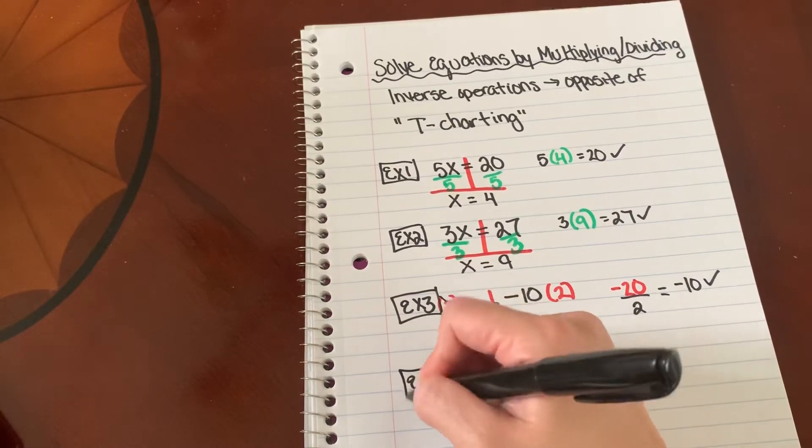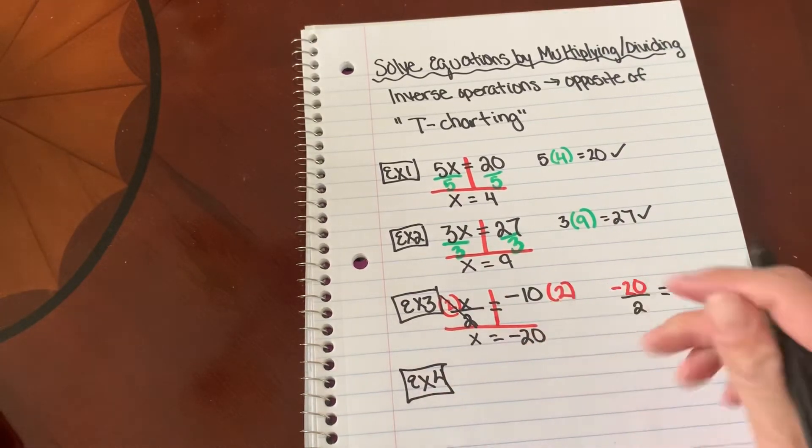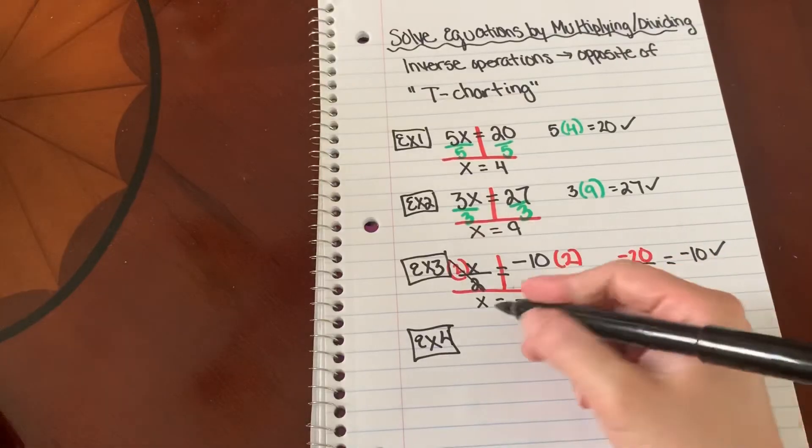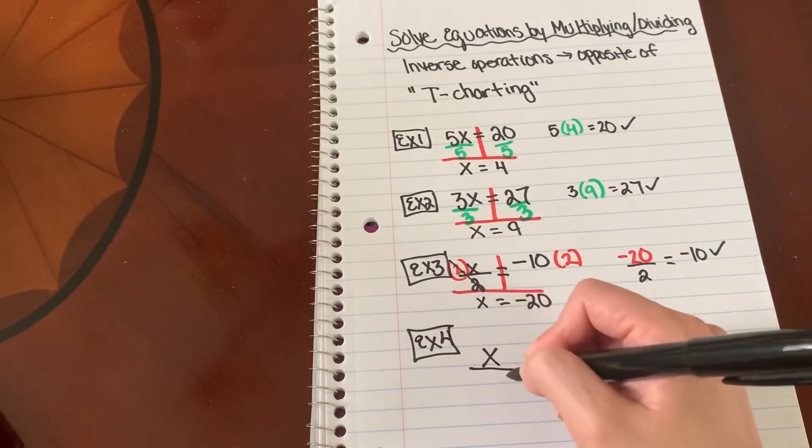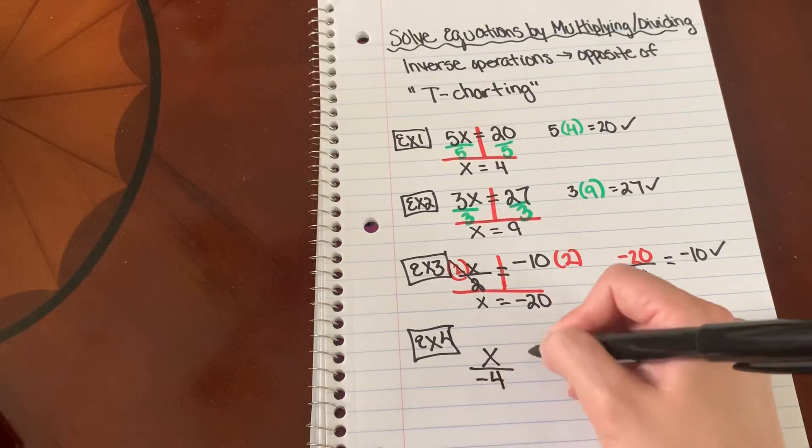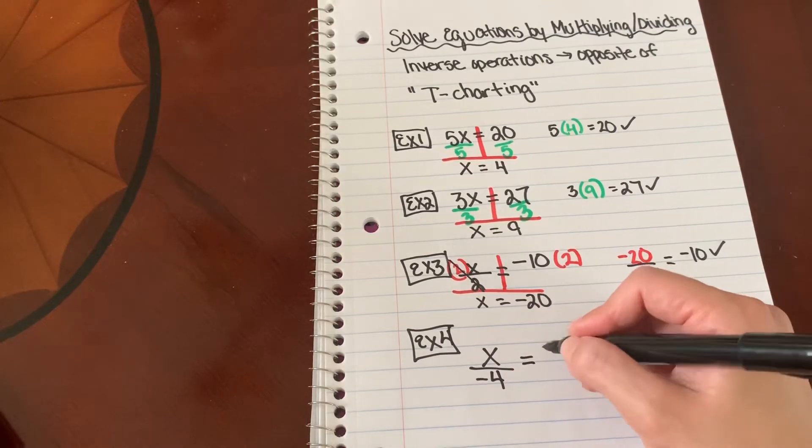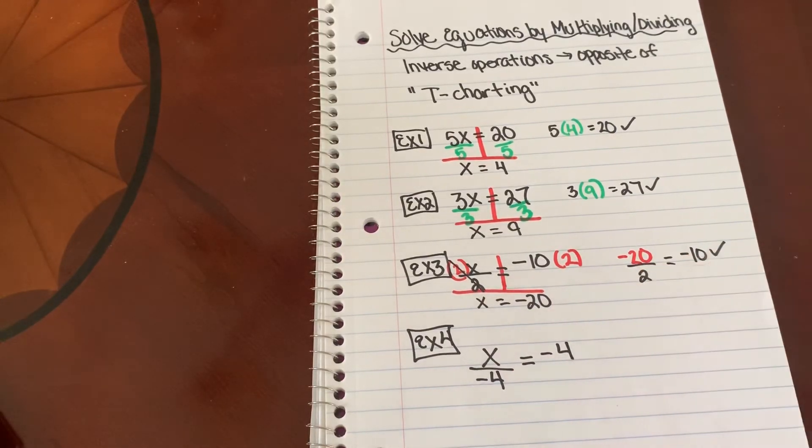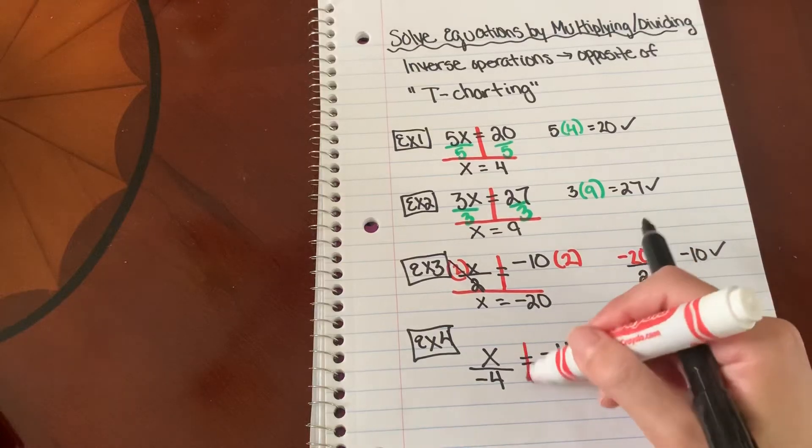All right. One more example. x divided by negative 4 equals negative 4. So we can go ahead and T-chart here.